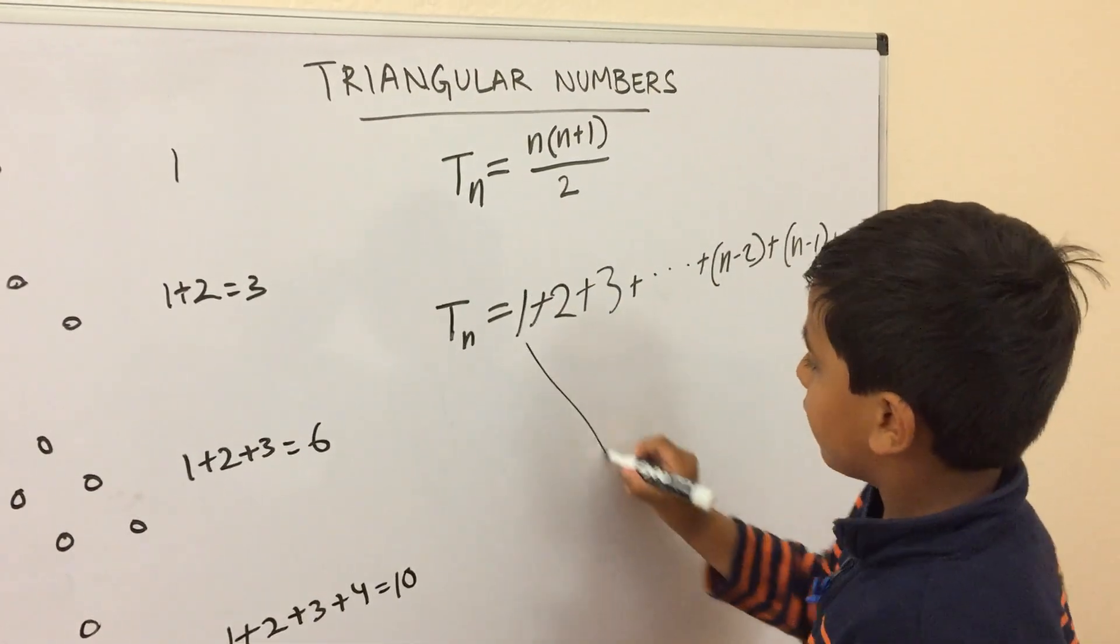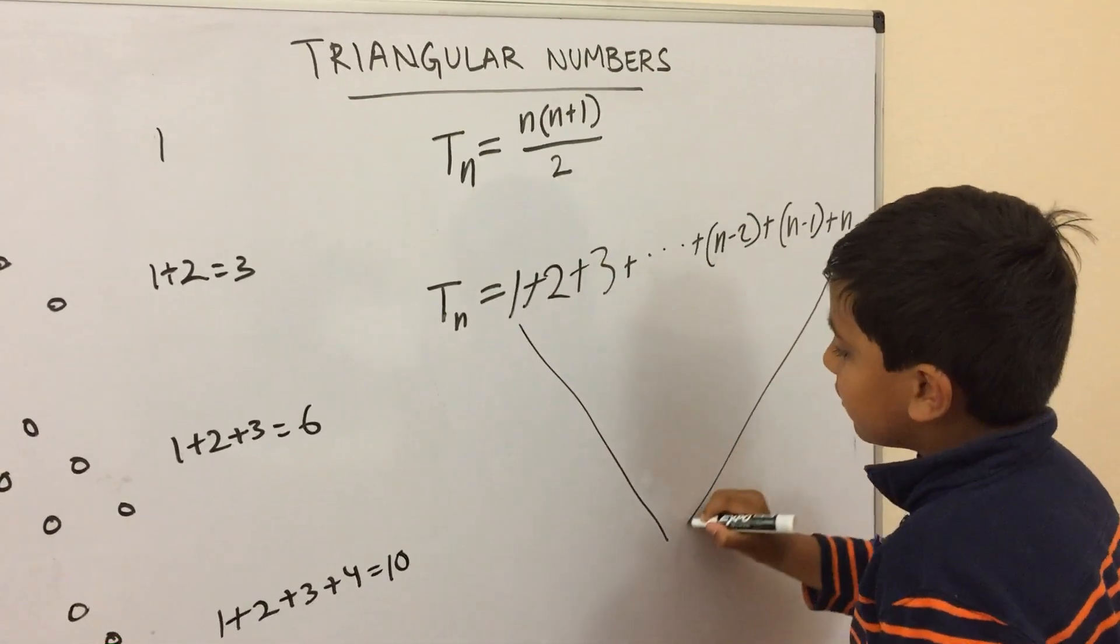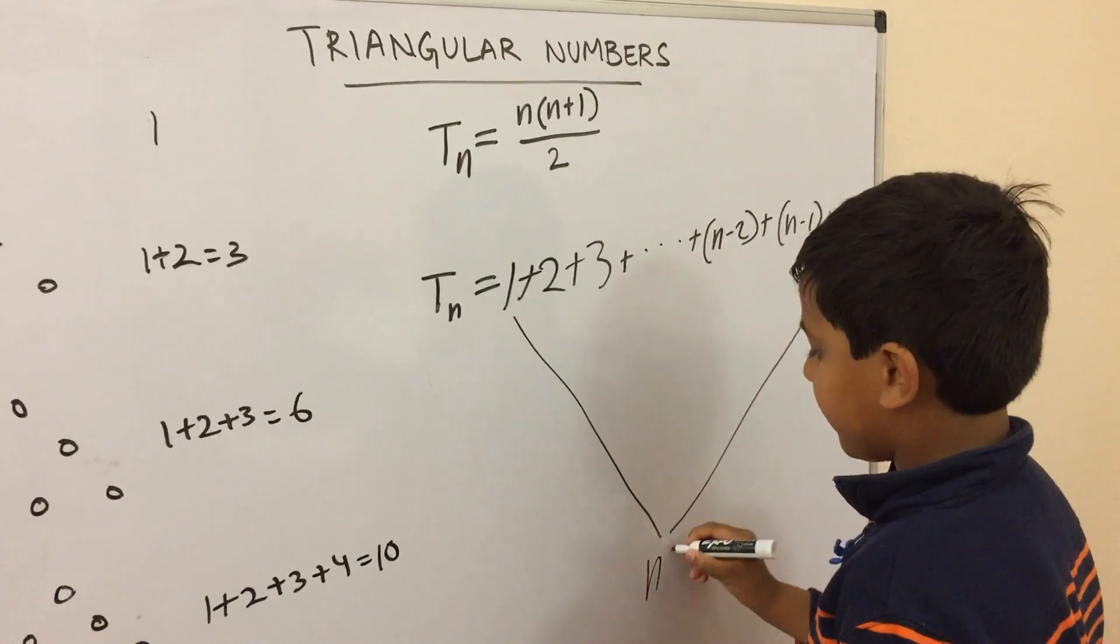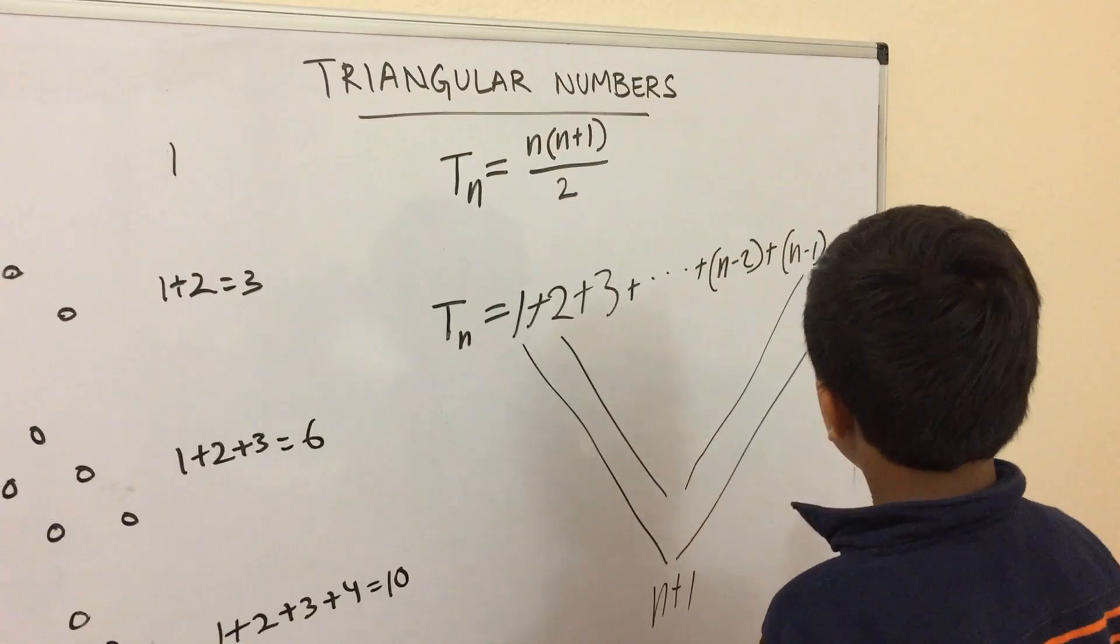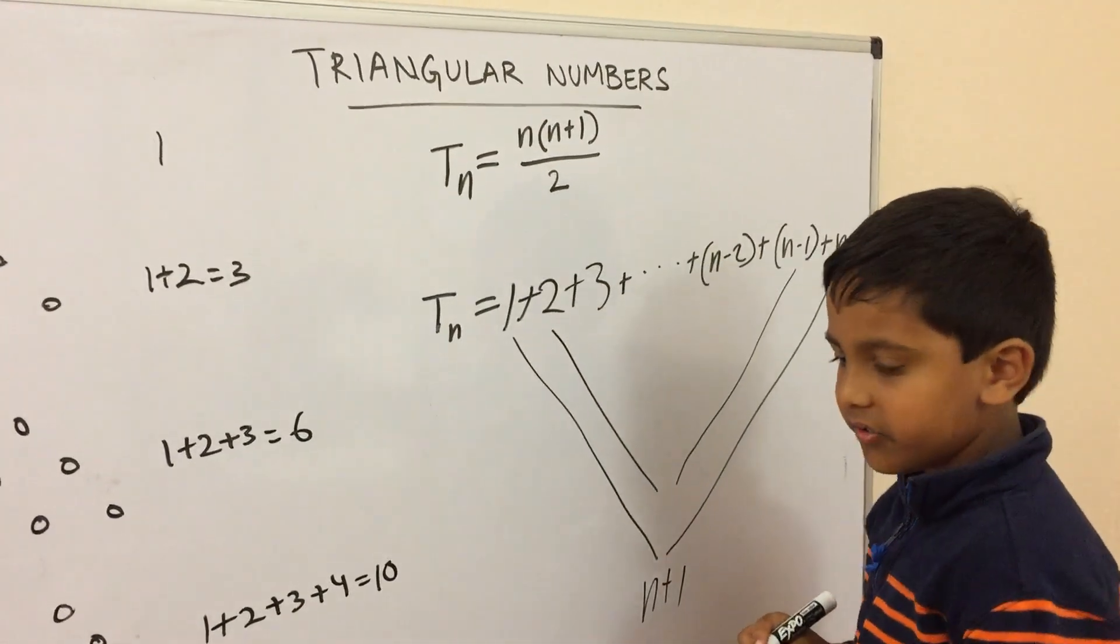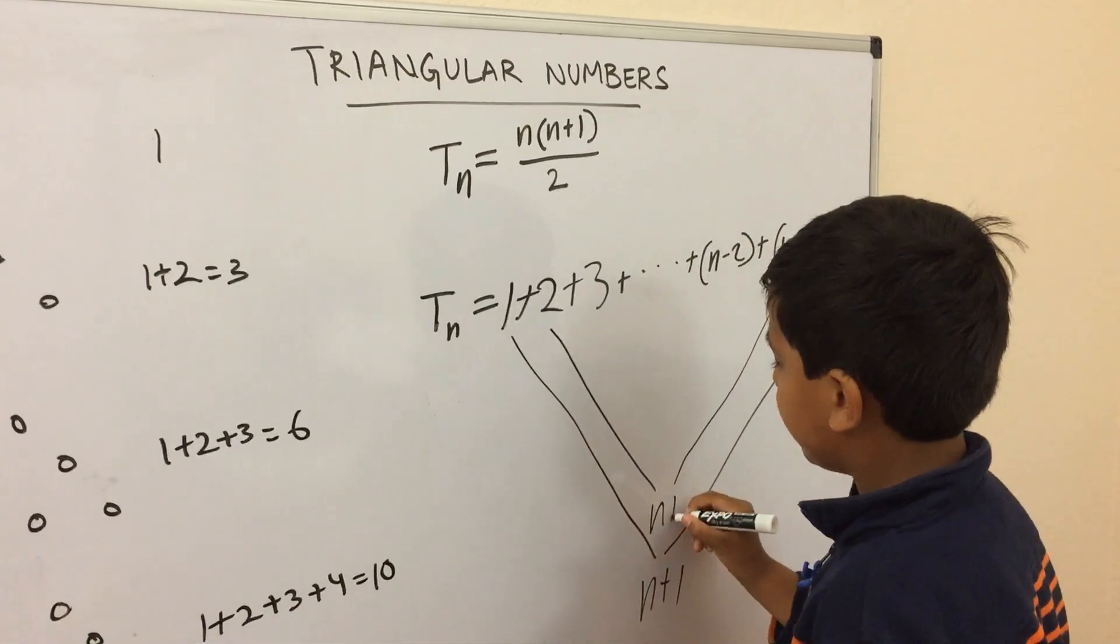Let's add the first and last numbers, and we get n plus 1. Second and second last numbers, we're going to add those and we still get n plus 1.